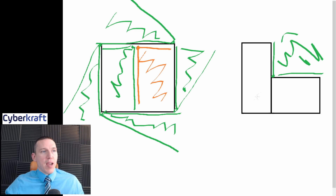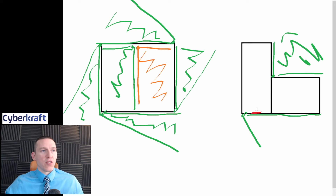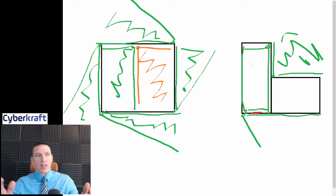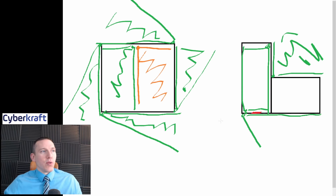You'd also want to place cameras at entrances. You'd probably have a camera here to look down the corner and also see the entrance, and then you may have an internal camera to also see that entrance. In a long room, maybe you have two cameras — one at each corner. So there are different camera placement strategies to consider.